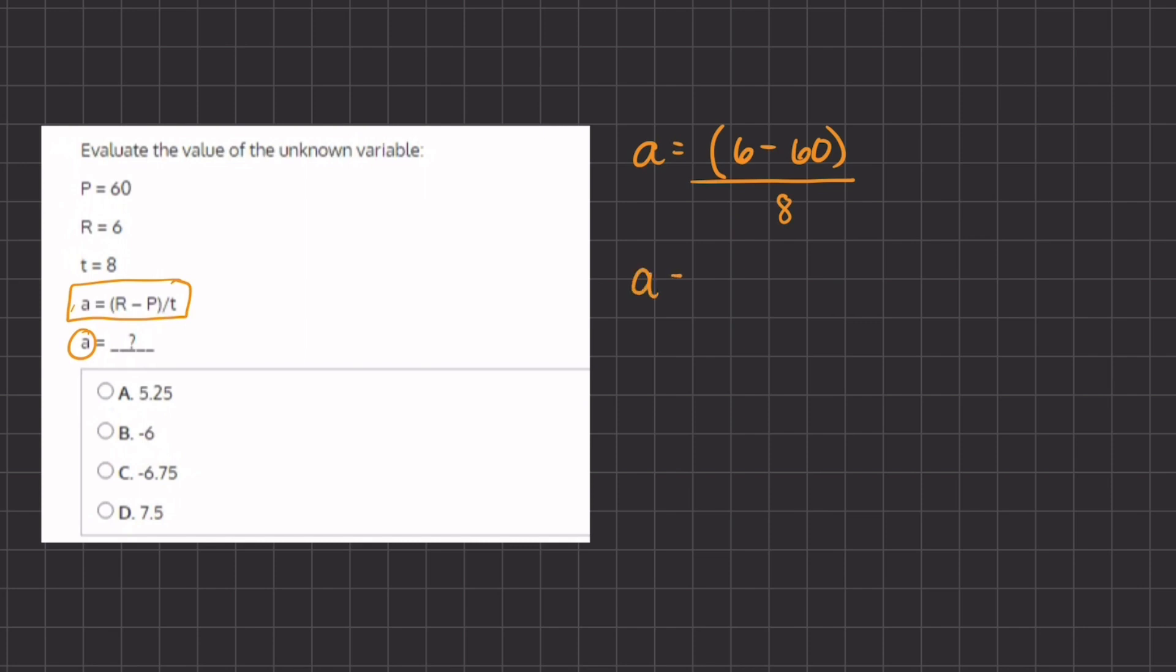Let's simplify what we have inside our parentheses. We have 6 minus 60, which gives us negative 54, divided by 8. Now we have to take this improper fraction and turn it into a decimal.